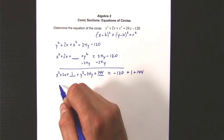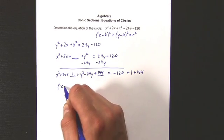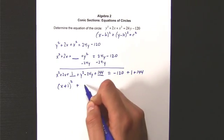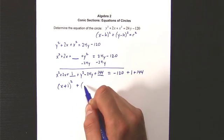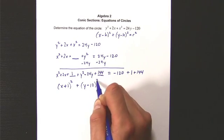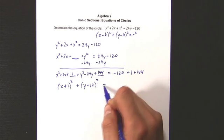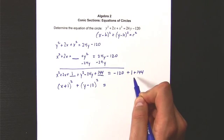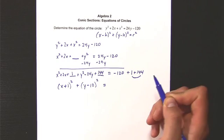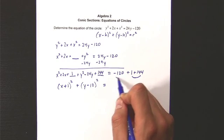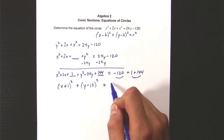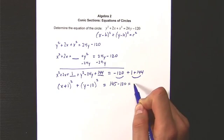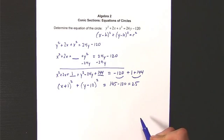So now that I've completed the square here, I've got x plus 1 quantity squared. On this side where the y's are, I have y minus 12 quantity squared. And then on this side, I just have to add all this stuff up. So I basically have 145, if I merge those two guys, minus 120. So 145 minus 120 is equal to 25. How about that?